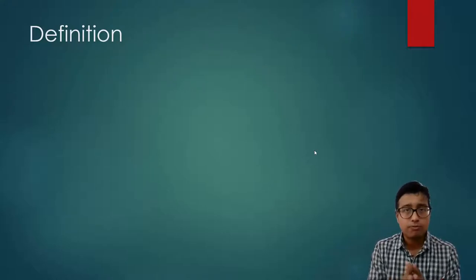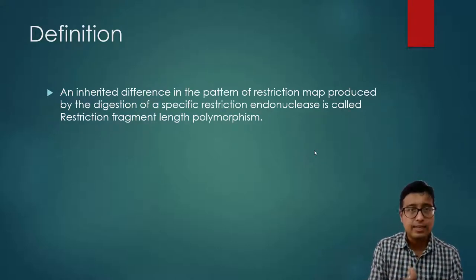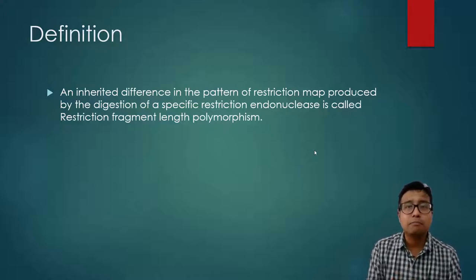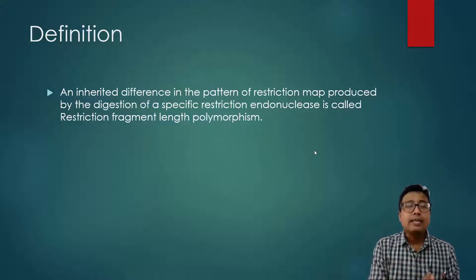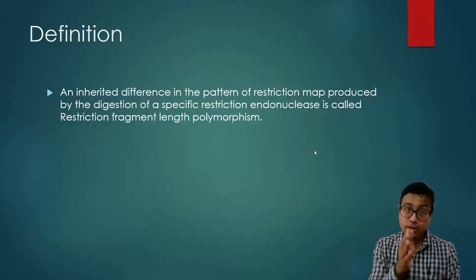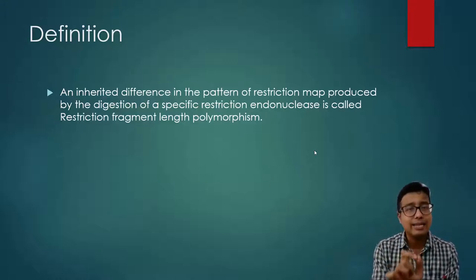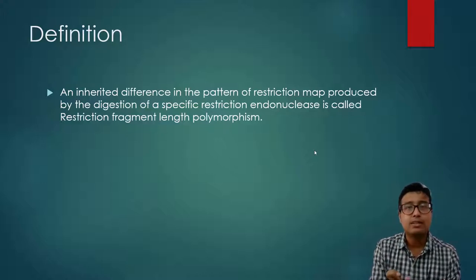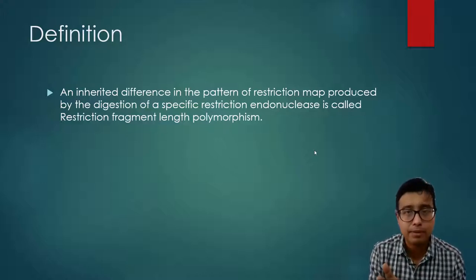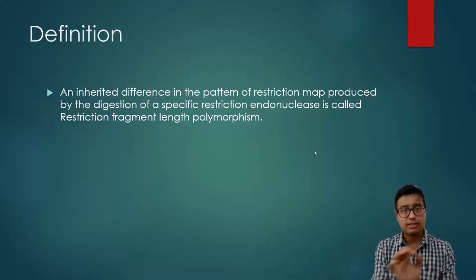The definition of RFLP is: it is an inherited difference in the pattern of restriction map produced by the digestion of a specific restriction endonuclease. You can note it down so you don't have to watch this video over and over again. This is known as RFLP.